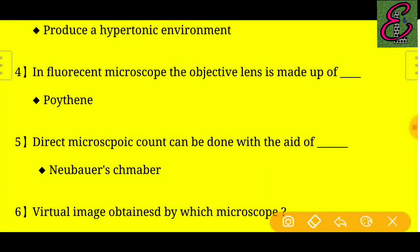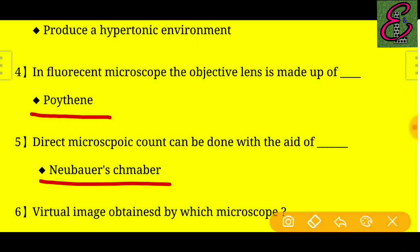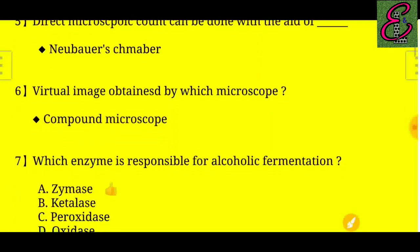Question number four: In a fluorescent microscope, the objective lens is made up of polythene. Question number five: Direct microscopic count can be done with the aid of a universal chamber.